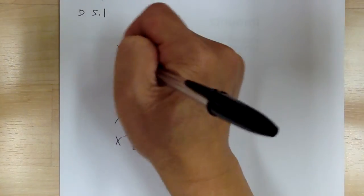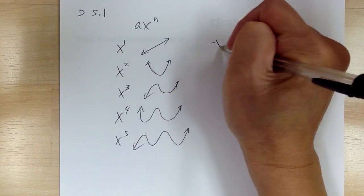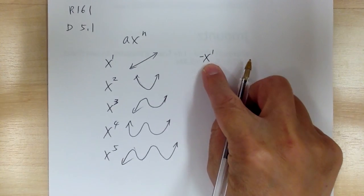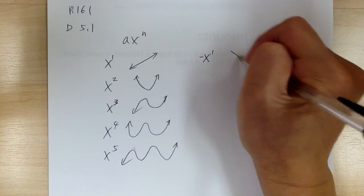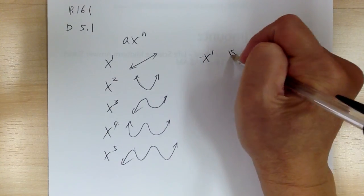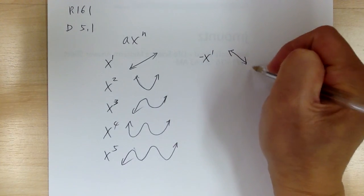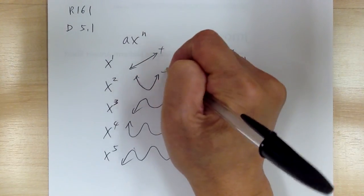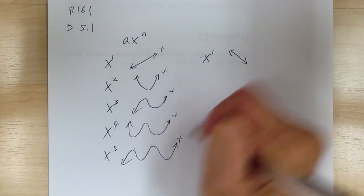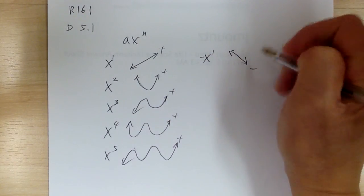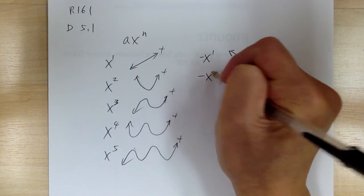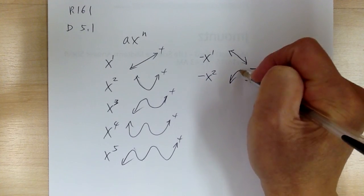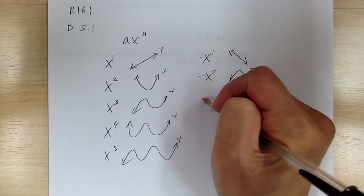This is for positive leading coefficients. Now if you have negative x to the 1st power, if your leading term is negative then the graph is going to go down. If it's negative it's going down; if it's positive it's going up. With negative x squared, you get 2 directions going downward.